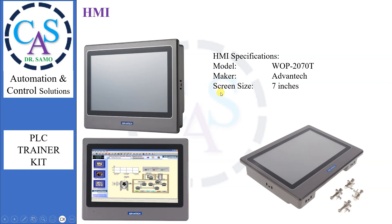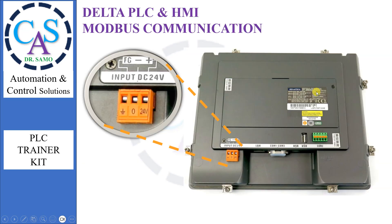HMI Specifications: Model WAP 2070T, Maker: Advantech, Screen Size: 7 inches. Power Supply: HMI requires 24V DC. Here, we connect ground to 0V and the positive to 24V DC.